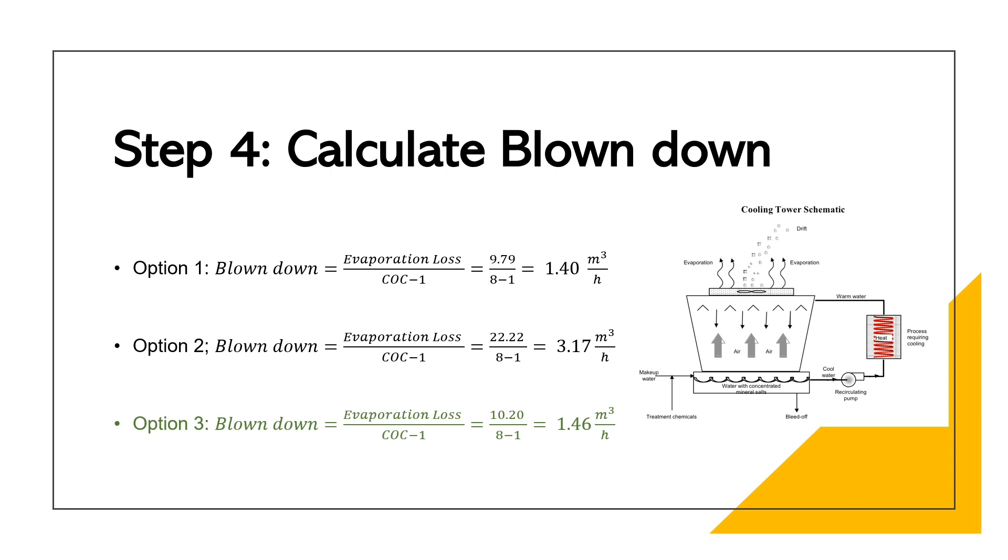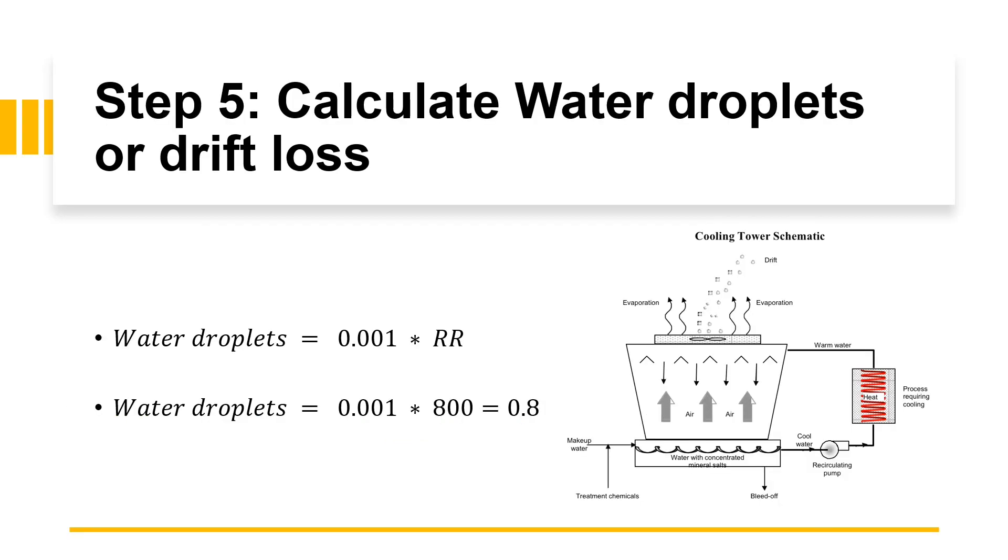Now for the blow down. Blow down is the relationship between evaporation loss and CoC minus one. Now let's assume a cycle of concentration of eight. And for each option, let's calculate the evaporation loss. Remember option one evaporation loss we got 9.79, hence we punch everything to calculator and you get a blow down of 1.40. Do the same thing for all three options. Again we are going to assume the third evaporation loss was the accurate equation here, hence let's move forward with the blow down option three as well.